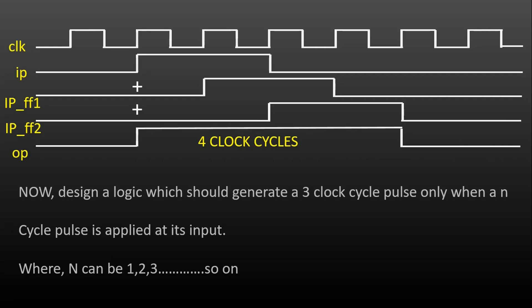The next question is also on your screen: design a logic that should generate a three clock cycle pulse at its output when an N clock cycle pulse is applied at its input, where N can be one, two, three, or any number of clock cycles — but irrespective of the width of the input pulse, the output should always be a three clock cycle pulse. This is a very good interview question and frequently asked these days. If any one of you knows the answer, please write it in the comment section and we can discuss it there.